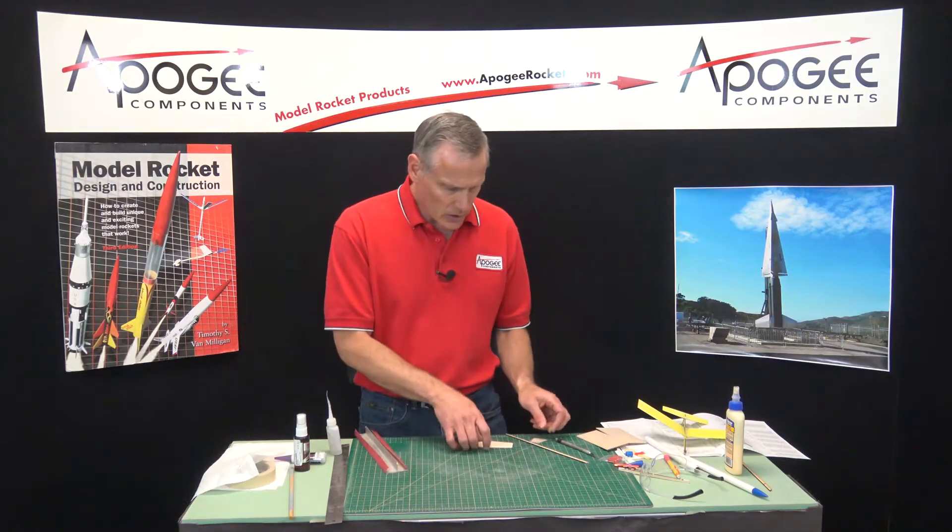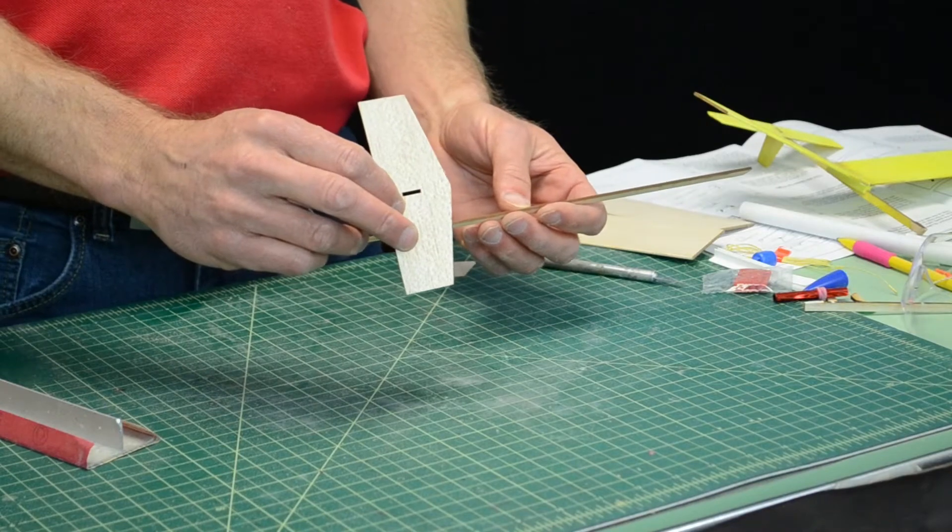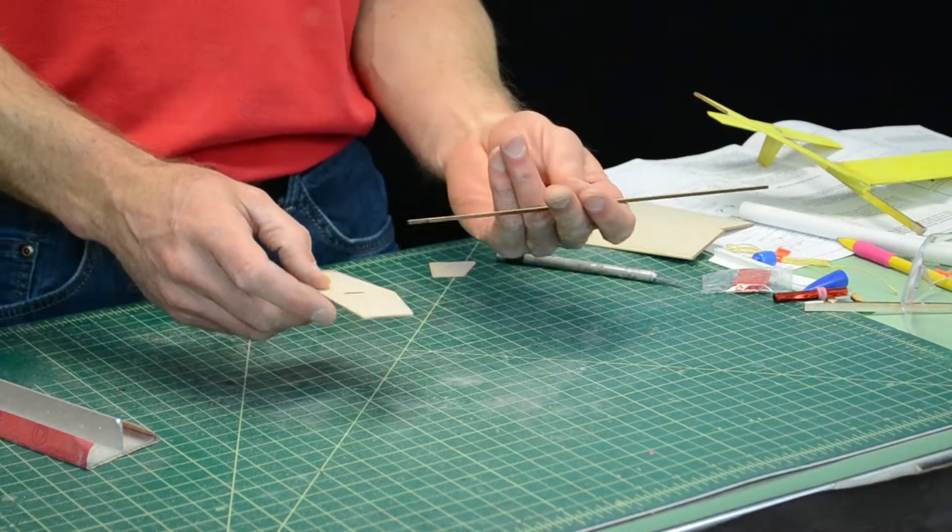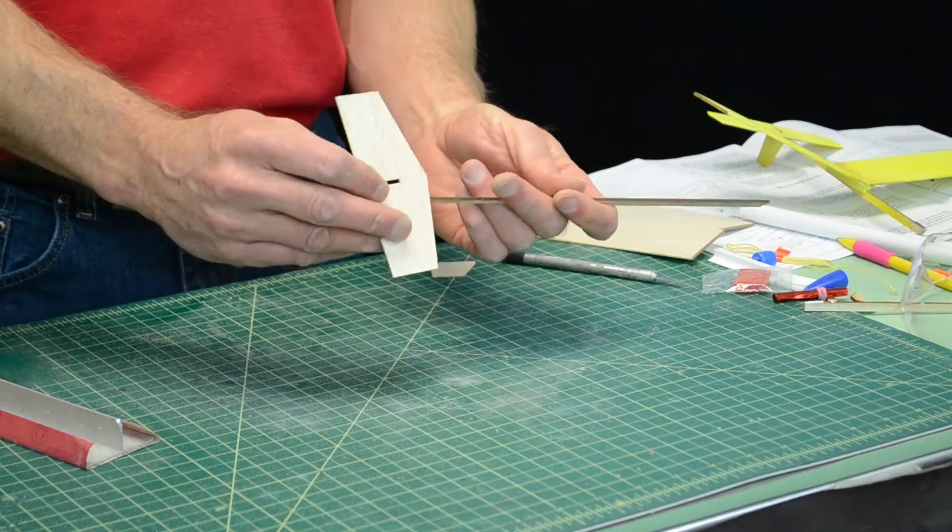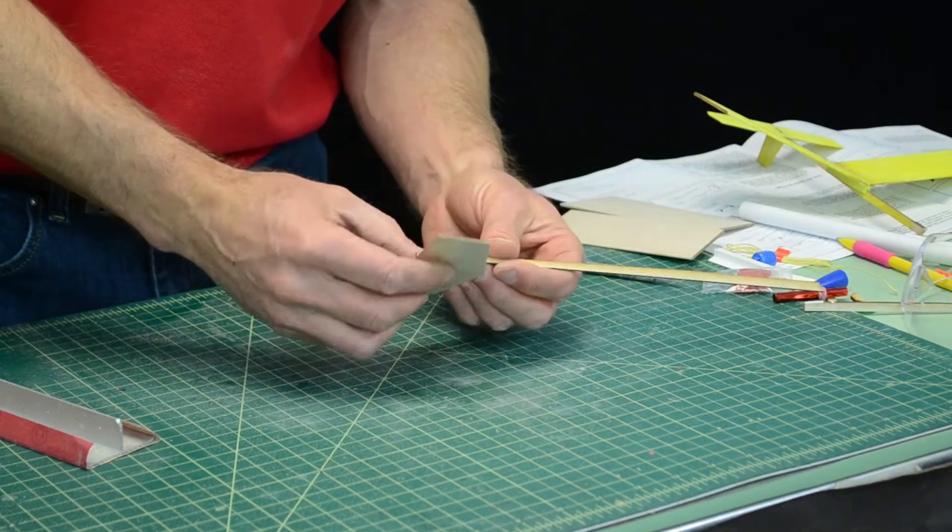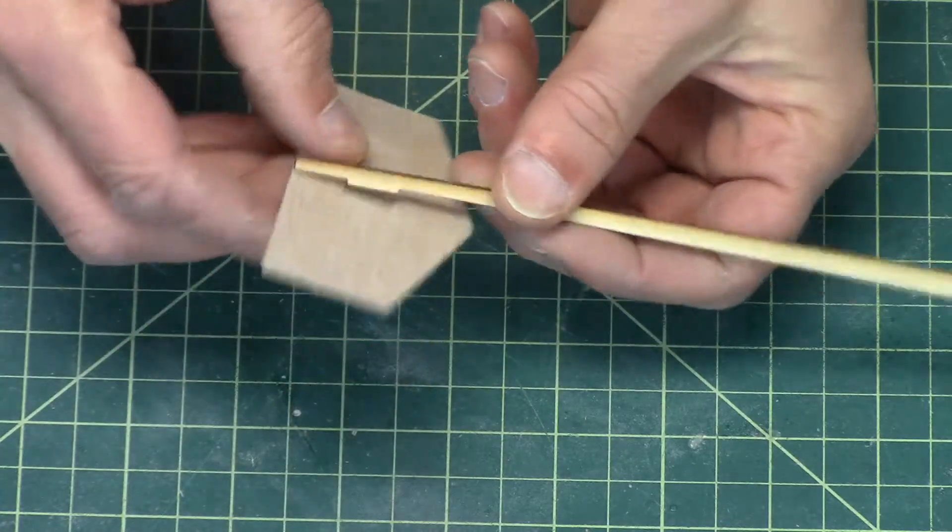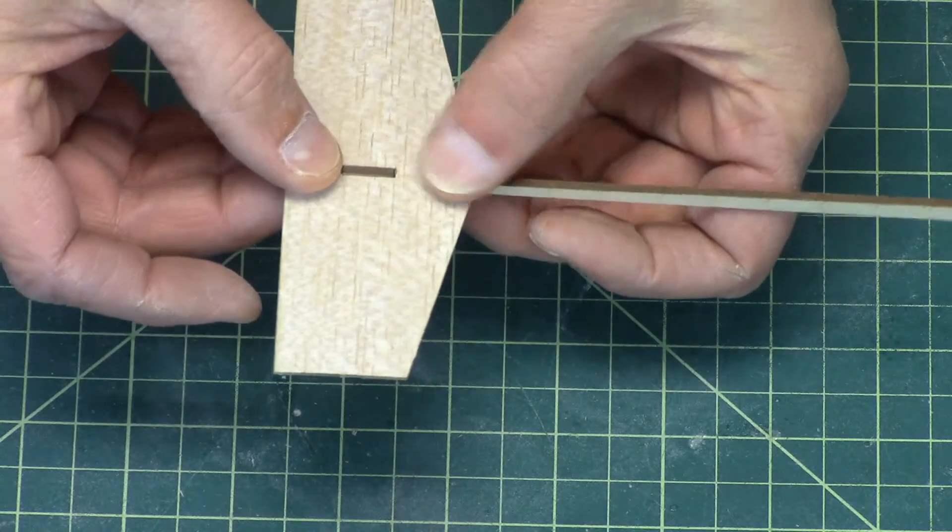Our next step is to glue the horizontal stabilizer onto the fuselage boom. If you look at it, it has that little notch there, and that's going to go onto this tab right here. You just put it on like that, and that's how it's going to be glued on.